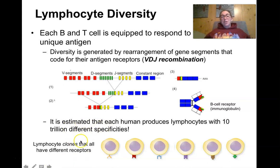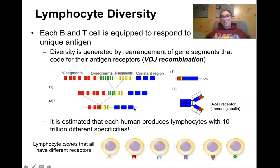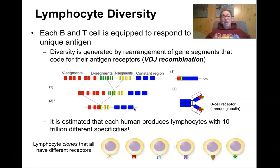It's estimated that each human produces lymphocytes with 10 trillion different specificities. And no two people have the same B and T cells, even identical twins who have the same exact DNA sequences — their cells will recombine those DNA sequences in different orders. Even two genetically identical clones will have totally different B and T cells, which is why they might have totally different immune responses to different pathogens.